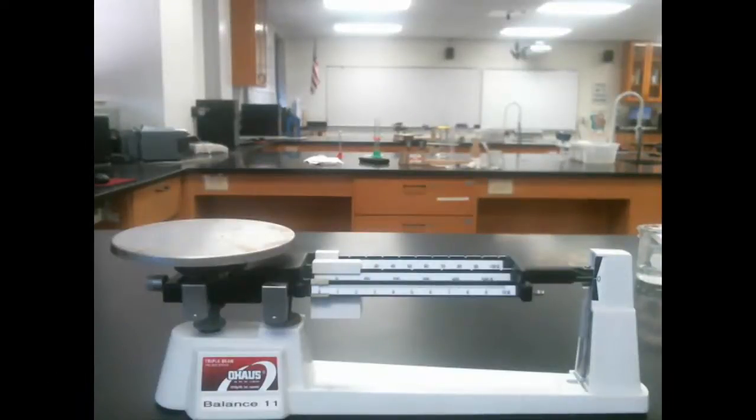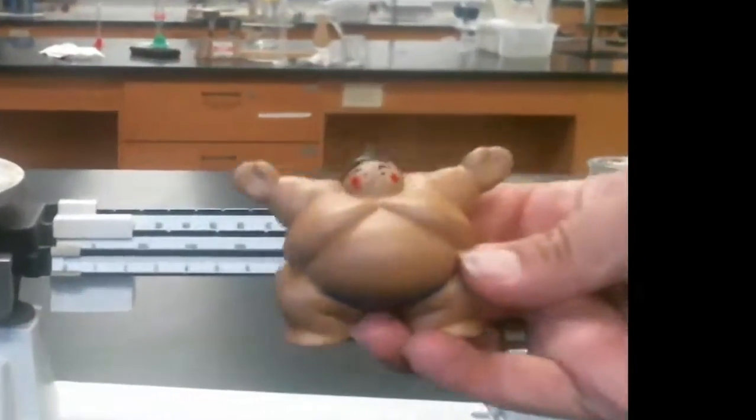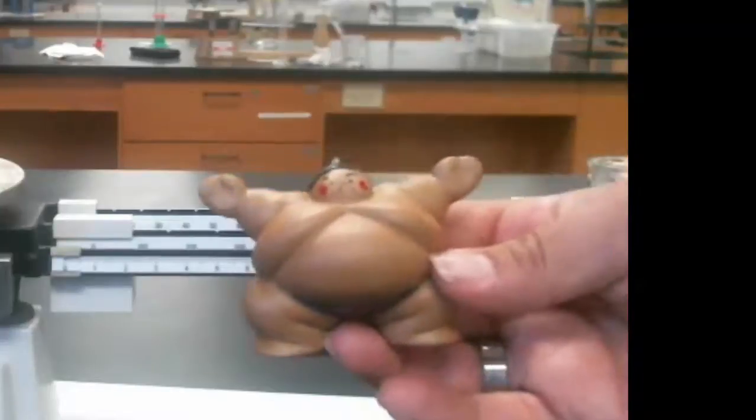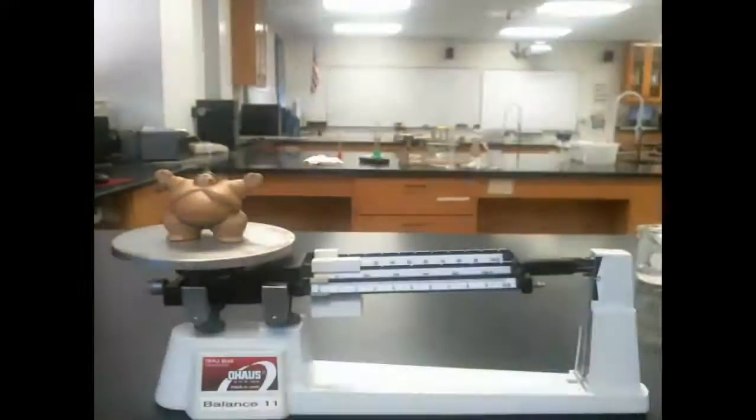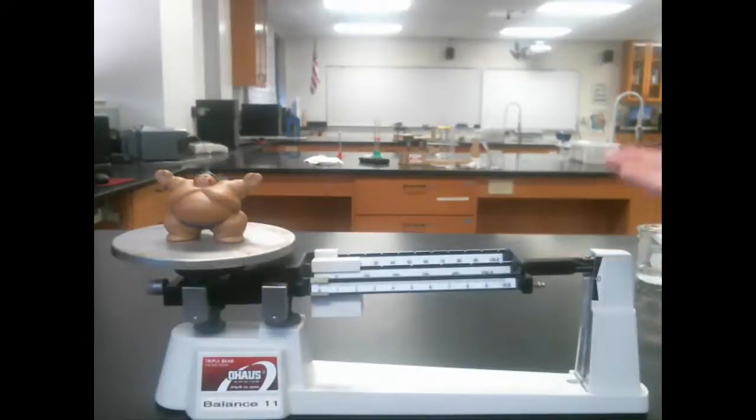Now, for the sake of this video, I'm not going to spend too much time on that because it can get a little time-consuming. We'll just assume that this is good to go ahead and measure. You need something to measure. We're going to use Mr. Sumo Wrestler here. I got him in Japan. We're going to put Mr. Sumo Wrestler right on the balance pan. Now, you can see, because he's a Sumo Wrestler, he's fairly massive, and the balance arm went right up and is now stuck against the top.